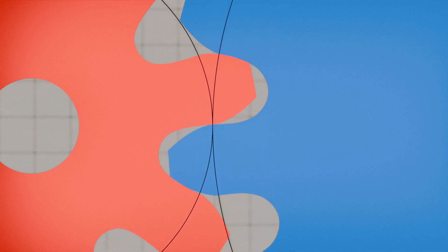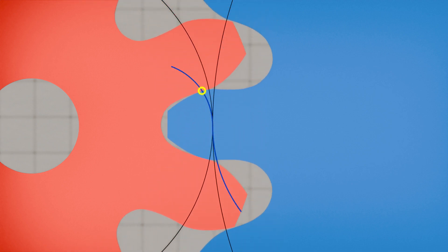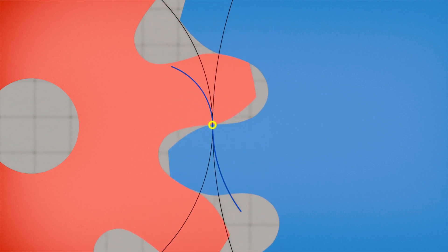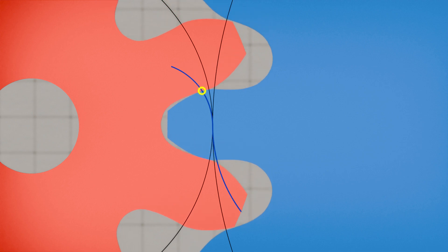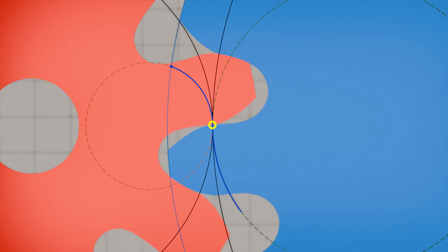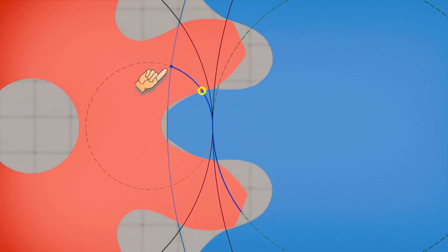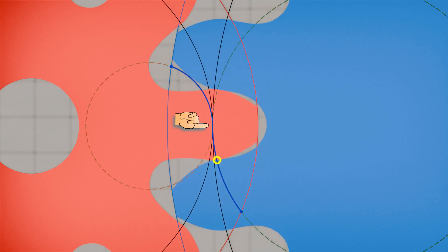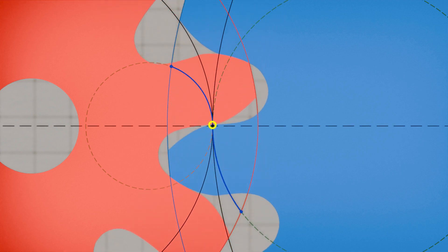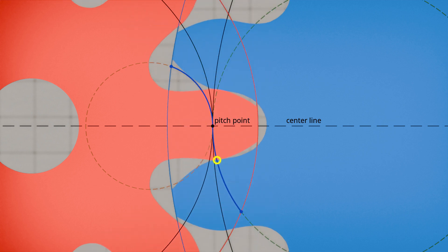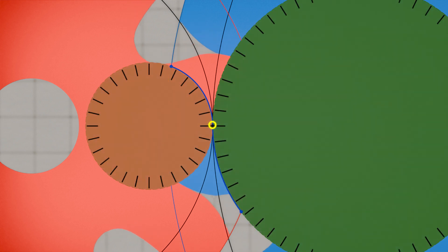Let us take a closer look at the meshing characteristics of cycloidal gears. The animation shows the point of contact between the teeth of the red driving gear and the blue driven gear. The line of action shown, along which the contact point moves, consists of two circular paths. The meshing begins at the intersection of the line of action with the tip circle of the driven gear and ends at the intersection with the tip circle of the driving gear. The inflection point of the two circles forming the line of contact is at the pitch point, which is located on the center line of the gear axes where the two pitch circles touch.